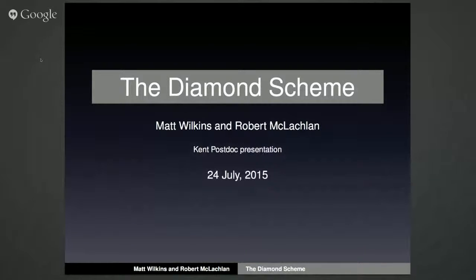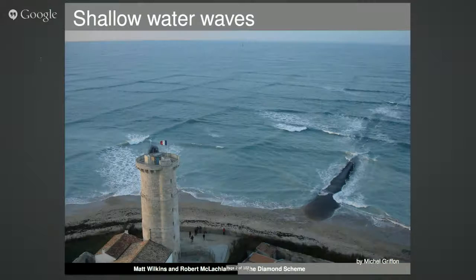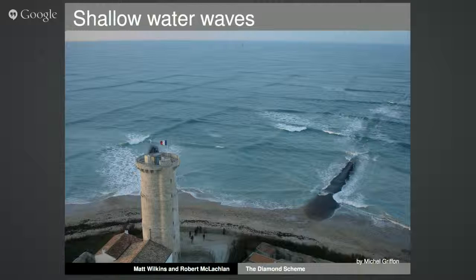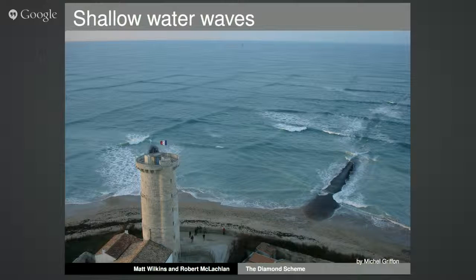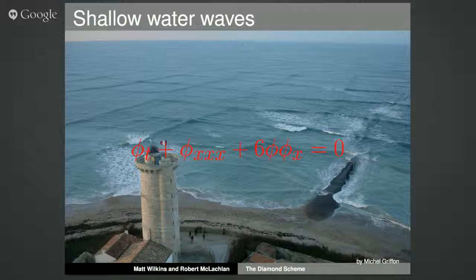This talk is about the diamond scheme, done with my supervisor Robert McLaughlin for my PhD thesis. This is in France — we're on a peninsula, waves are coming in from the left and right making a neat grid-like pattern. The PDE that models the individual waves is the KdV equation: it's first order in time and third order in the space derivatives.